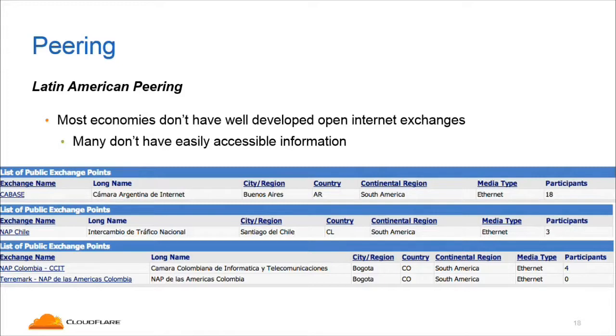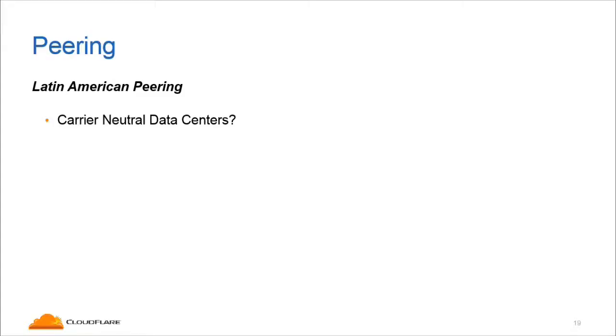When we look at Latin America from the outside using PeeringDB — the best source of information when looking at the world holistically — you can see that CABASE is doing quite well with a fair number of participants listed. When we look at Chile, it shows three participants connected to an IX in Chile. In Colombia, there are two internet exchanges but only four on one and zero on another — a big gap. This information needs to be shared better so incoming networks know what to expect. Another big problem is the lack of carrier-neutral data centres in the region. Not having a carrier-neutral data centre is a stopper against peering, because the single carrier owning that facility will block access to other carriers. A neutral building means anyone can interconnect with anyone — this is why peering has been so successful in North America, Europe, and Asia.